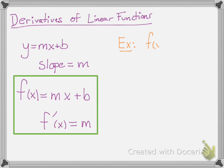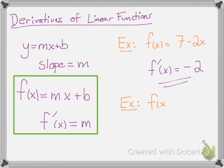So let's take a look at a few examples. If you have f of x equals 7 minus 2x, that's linear and the slope is negative 2, so f prime of x is negative 2. If f of x is equal to x, that's a linear function — it's just a line and the slope is 1, so f prime of x is 1.